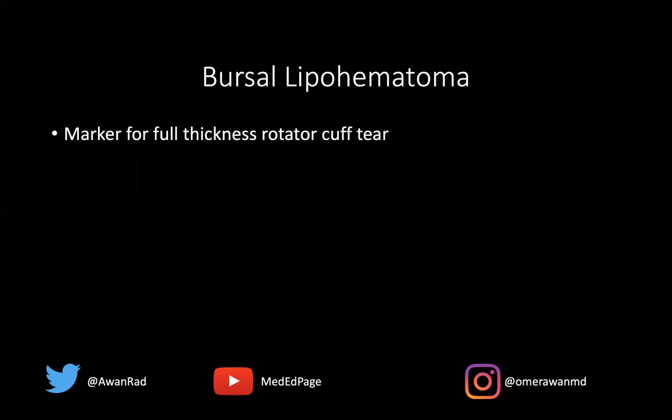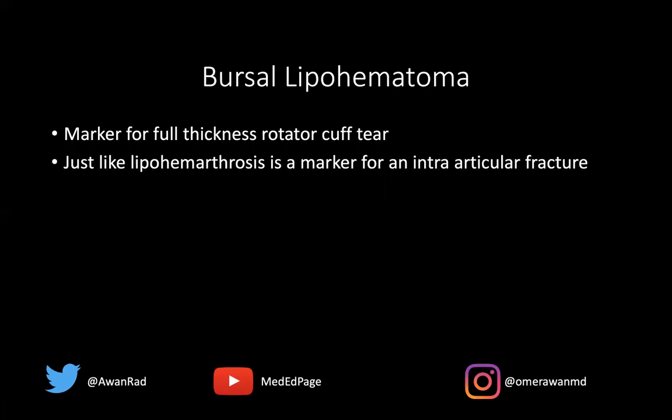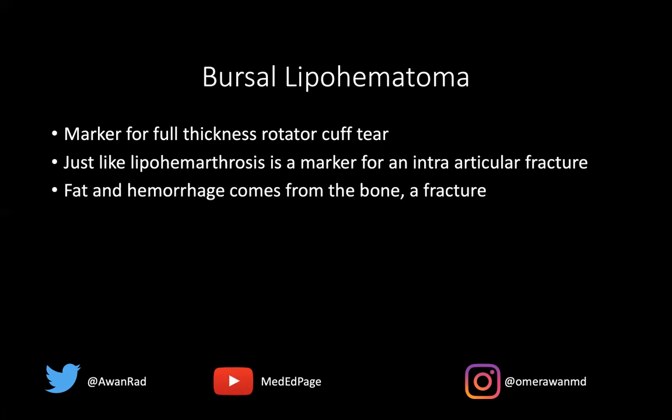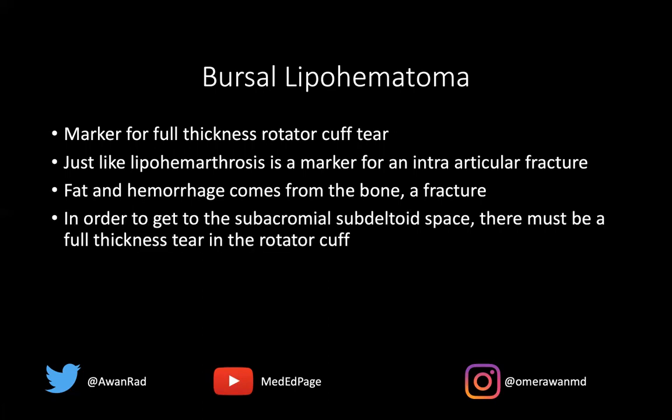A bursal lipohematoma is really a marker for a full thickness rotator cuff tear, just like a lipohemarthrosis is a marker for an intraarticular fracture. The only way blood and fat can get into the joint space is if there's a fracture that goes to the joint space. And in order to get to the subacromial subdeltoid space, there must be a full thickness rotator cuff tear — and that's exactly what we see in this case.